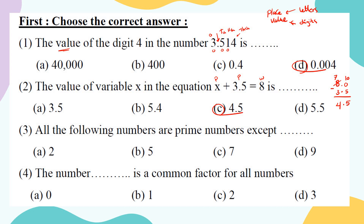Number three: all the following numbers are prime except one. A prime number has only two factors: one and itself. Two is prime, five is prime, seven is prime, but nine has factors: one, nine, and three times three. So nine is not prime. The answer is nine.